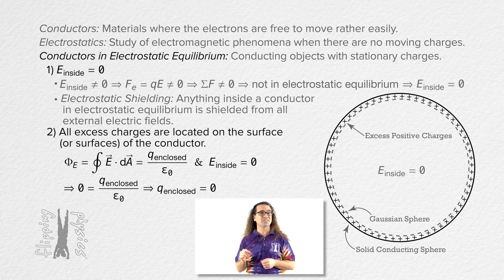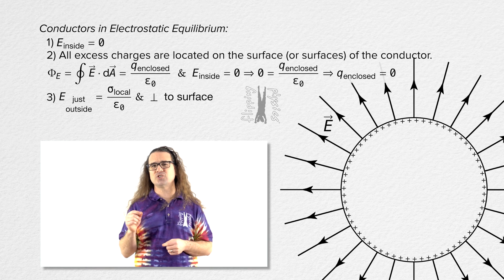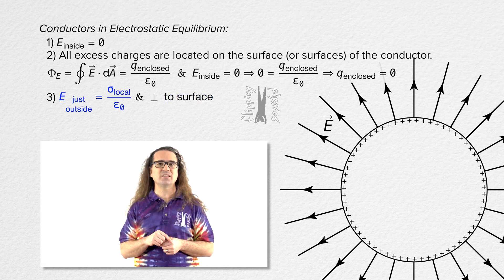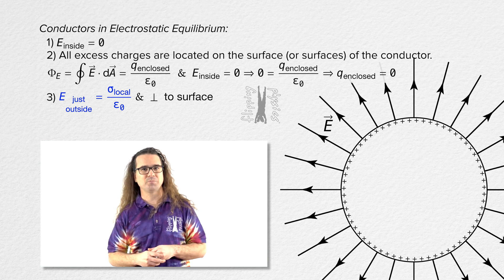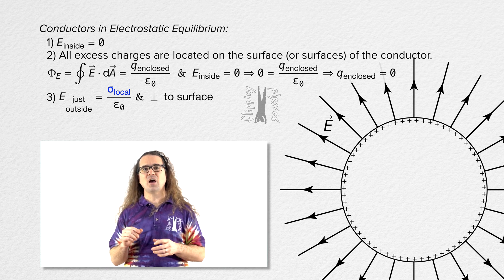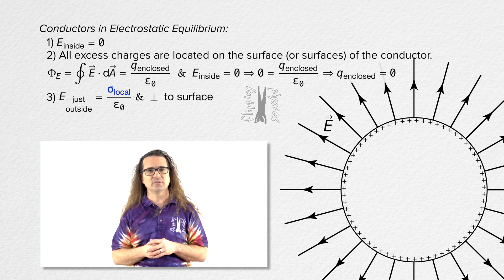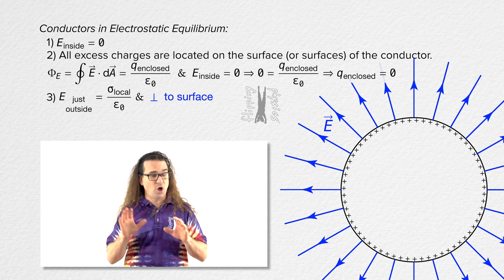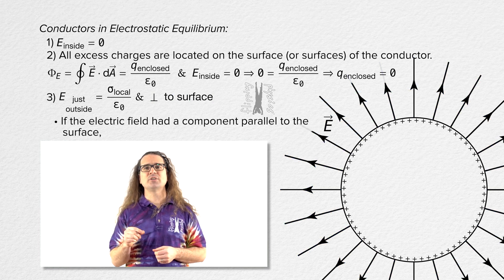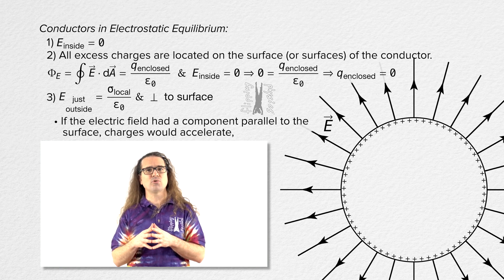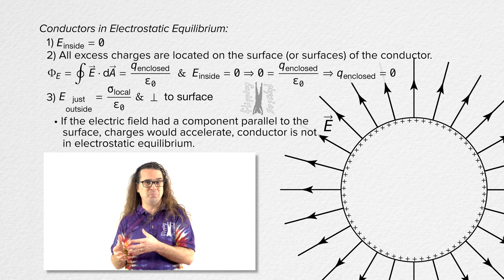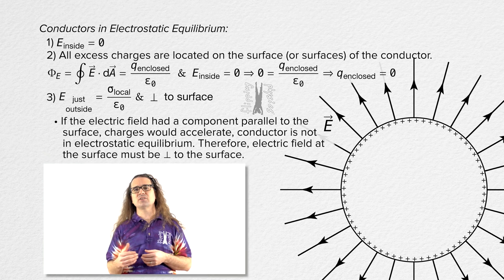The third thing you need to remember about conductors in electrostatic equilibrium is that the electric field just outside the surface of a conductor in electrostatic equilibrium is perpendicular to the surface and equals the local surface charge density divided by the permittivity of free space. If the electric field had a component parallel to the surface of the conductor, the charges would have an electrostatic force acting on them parallel to the surface, which would cause the charges to accelerate and the conductor would no longer be in electrostatic equilibrium. Therefore, the electric field at the surface must be perpendicular to the surface.